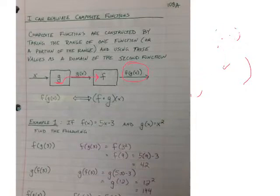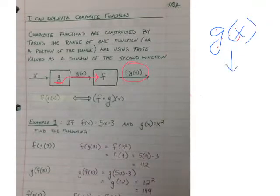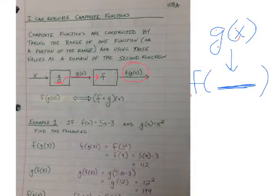Let's draw this again over here so it's more accurate. We're going to take the range of g of x and plug it in to the variable for f. This is kind of easier to understand if we take a look at examples. So I'm going to show you some examples.